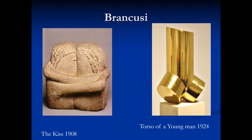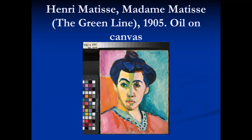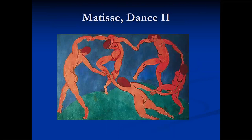A group of artists centering around Henri Matisse called themselves Fauves, which means wild beasts, and featured color in a new way to depict light and space. Fauves believed that art expressed the emotional state of an artist. A good example of Fauvism is Henri Matisse's Madame Matisse. Notice the unusual choice of bold colors in the woman's face, including the green line dividing her face. Matisse's 1910 Dance II includes some hidden references: one is the initial M for Matisse created by the joined arms of two of the dancers, and another is the image itself, which is borrowed from Matisse's earlier work The Joy of Life.